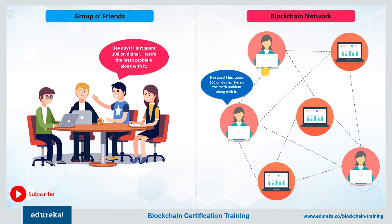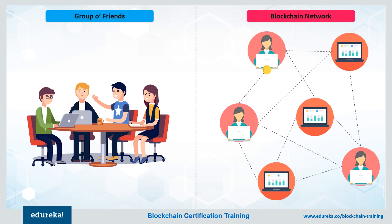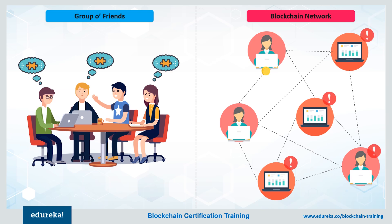This transaction comes with a mathematical problem, which is the basis of trust between the group of friends. As soon as the problem is broadcasted, a race begins between the participating members to earn the reward that comes with the computational effort. Similarly, on a blockchain network, a race starts among the participating members to solve the math. Here the math problem is referred to as consensus, while the race to solve the problem in order to earn the reward is analogous to mining.